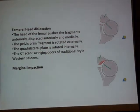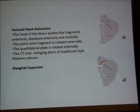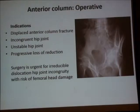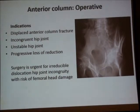We should address the femoral head dislocation, the position of the femoral head, and whether there is marginal impaction — this is very important in selecting the approach and surgical technique. The displacement pattern: the pelvic brim fragment rotates externally, the quadrilateral plate rotates internally, and the femoral head comes in between. On CT scan, this is sometimes called the 'swinging doors of the western saloon.' Surgical intervention is indicated when there is displacement of the articular surface, incongruity, instability, or loss of reduction.